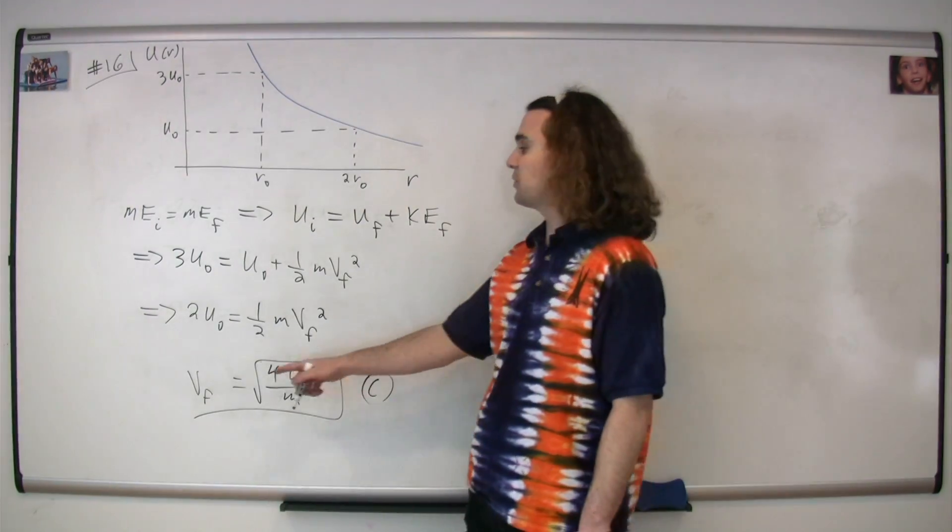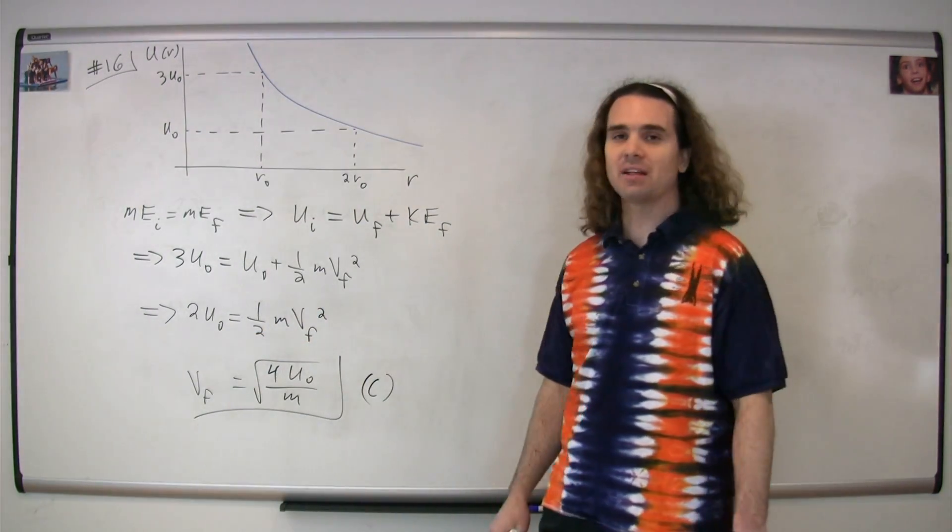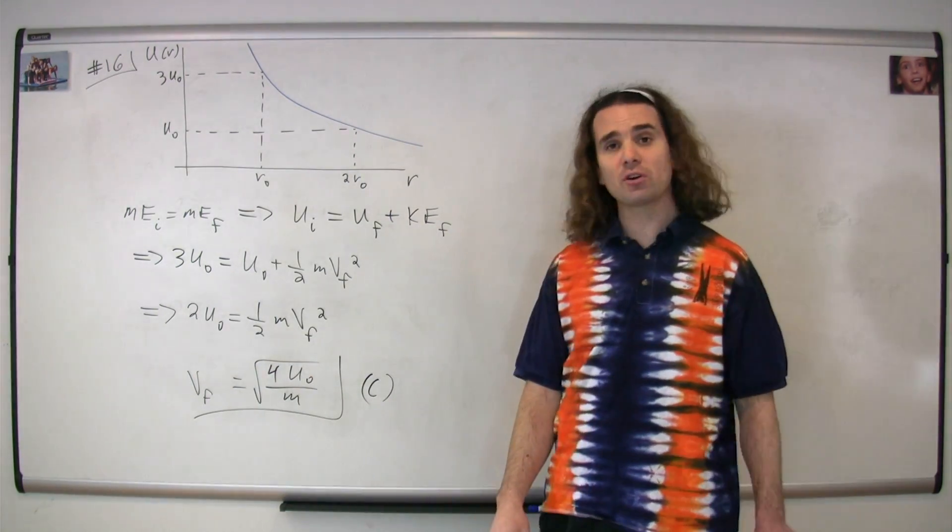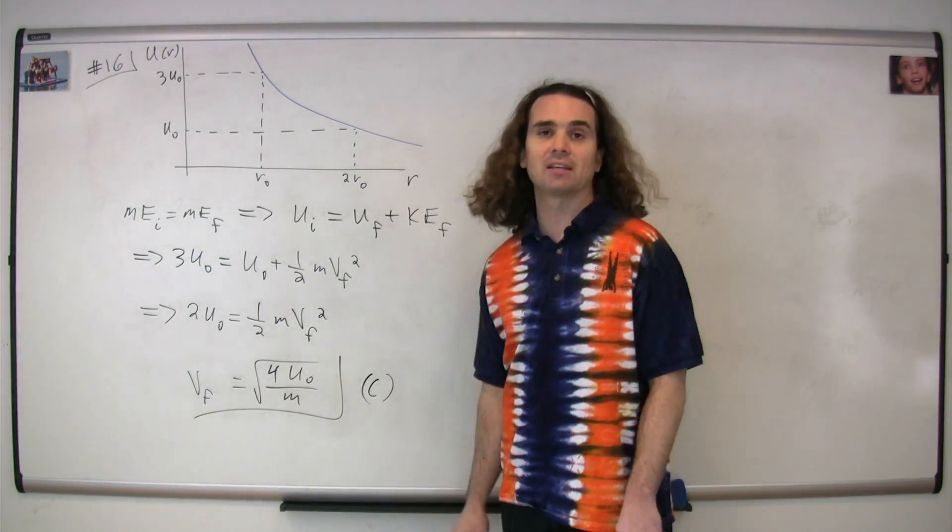Subtracting u-naught from both sides, we get 2u-naught is equal to one-half mass times velocity final squared. Solving for velocity final, we get that the velocity final is equal to the square root of 4u-naught over m. The correct answer is c.